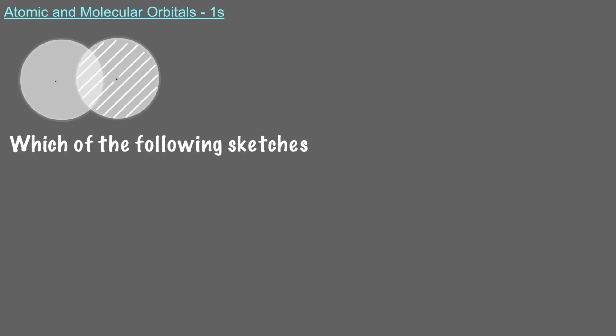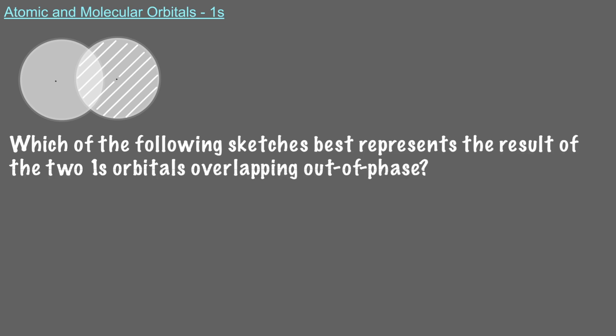Now let's look at what happens when atomic orbitals overlap out-of-phase. Which of the following sketches best represents the result of the two 1s orbitals overlapping out-of-phase?